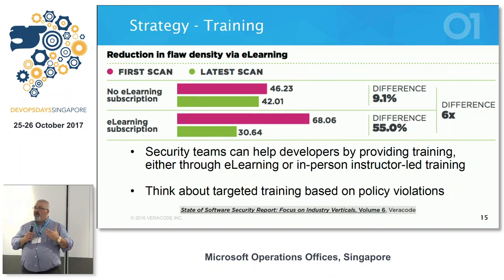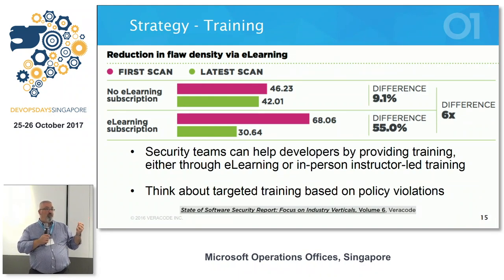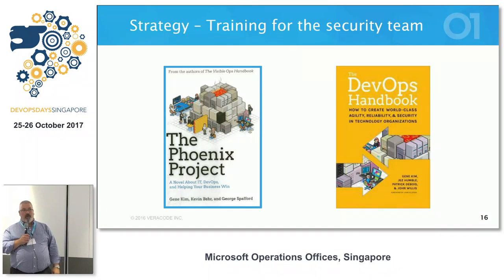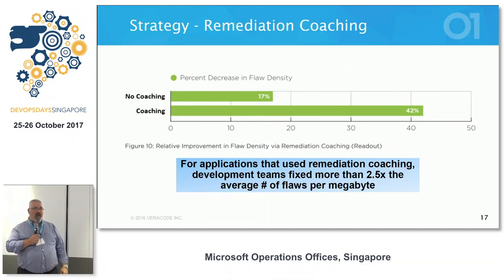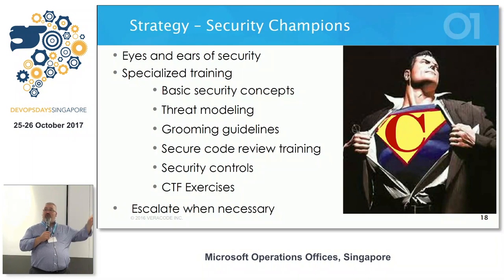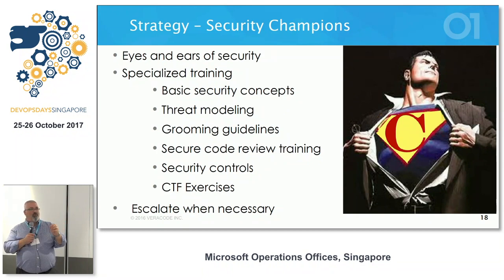One thing we've measured in our state of software security is around training — if we give developers tools to train on, they get six times better and six times faster. For security professionals it's about reading material. You have to understand how software is built today — read the Phoenix Project, that should be required reading. Helping developers fix what they find: as developers, we've never been trained in this, we need to get trained and we need someone to help us.